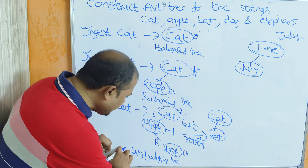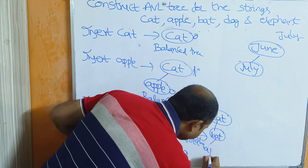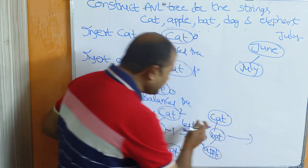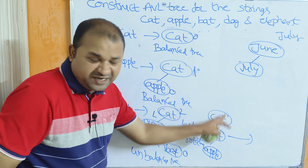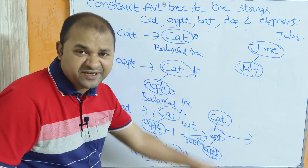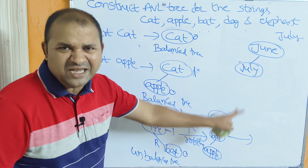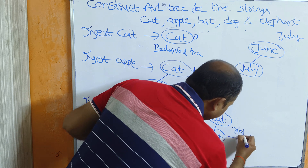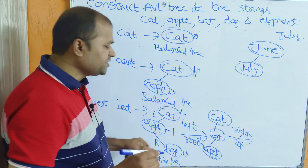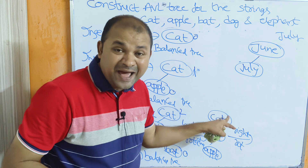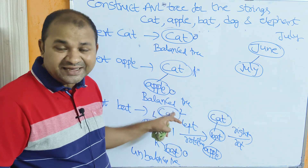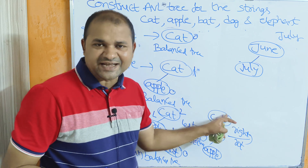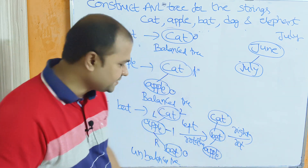After rotating apple to the left, bat occupies apple's position and apple becomes bat's left child. This gives us a left-skewed structure. The left rotation is complete. Next, we perform the right rotation directly on the unbalanced node cat. Cat is the unbalanced node, so we perform the right rotation directly on cat.